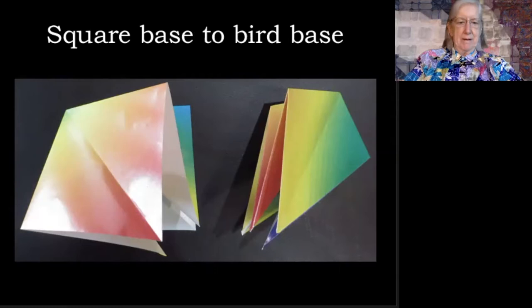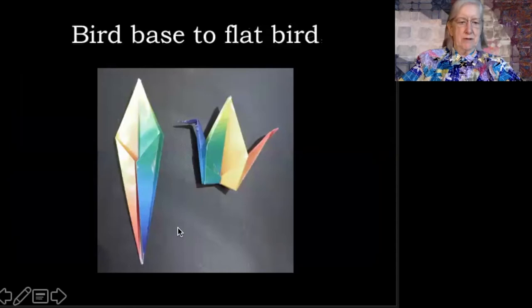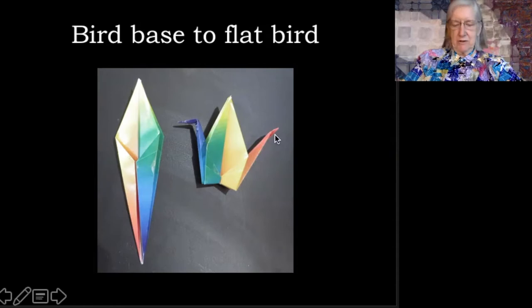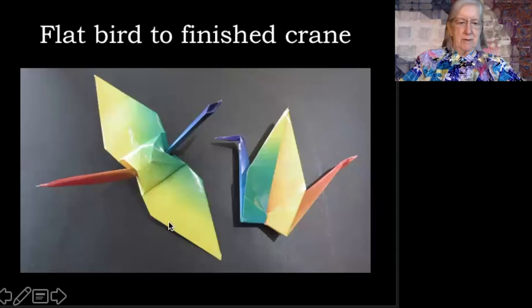To make the bird, we fold up the two wings, and then we fold in edges to make two long skinny bits. We fold up the long skinny bits to make the head and the tail. So now we have a flat version of the bird, and all that remains to do is to pull in the wings and create a three-dimensional form of the crane.